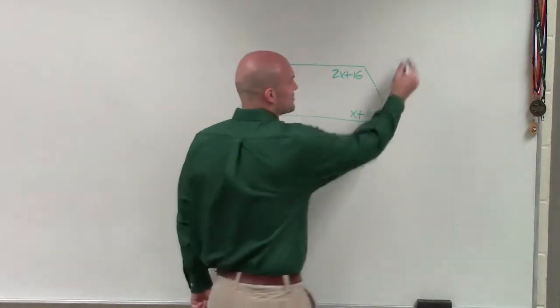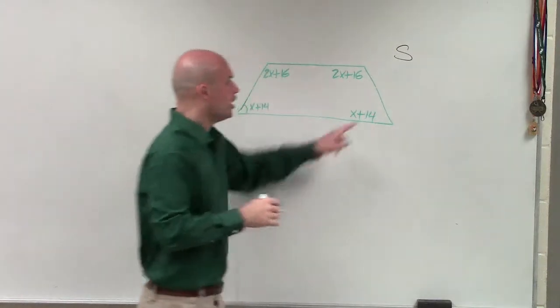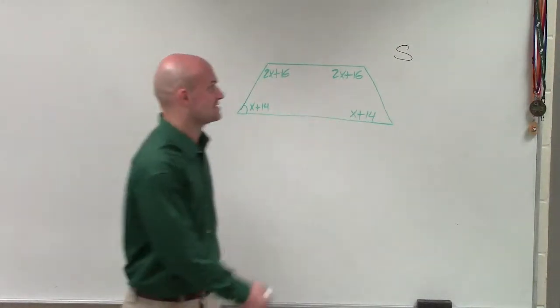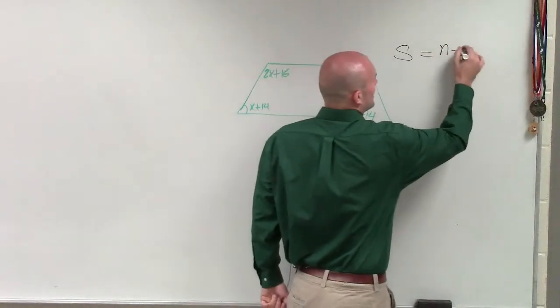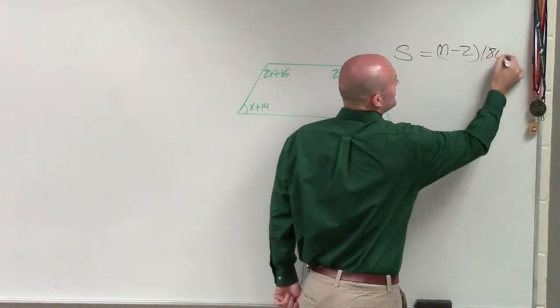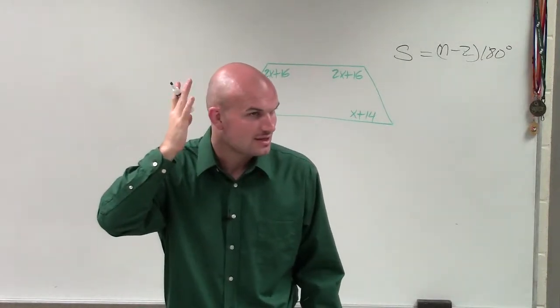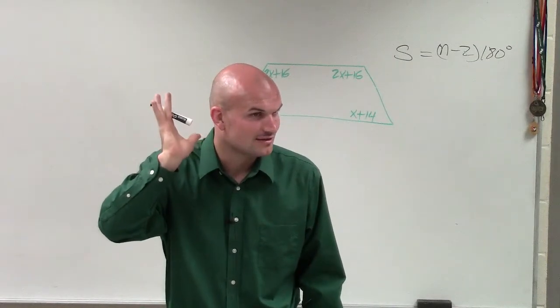But remember, we can always go back to our formula that the sum of all of these angles—this angle plus this, plus this, plus this—is equal to n minus 2 times 180, where n represents what, Ashley? n represents the number of sides.